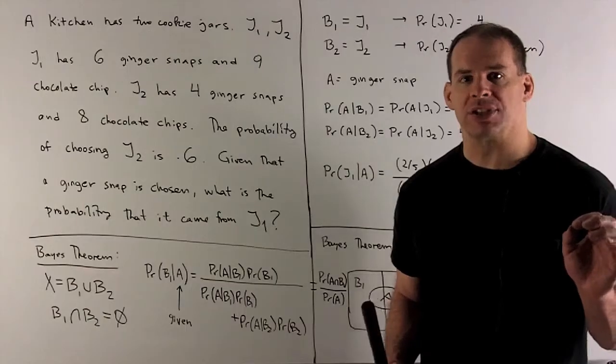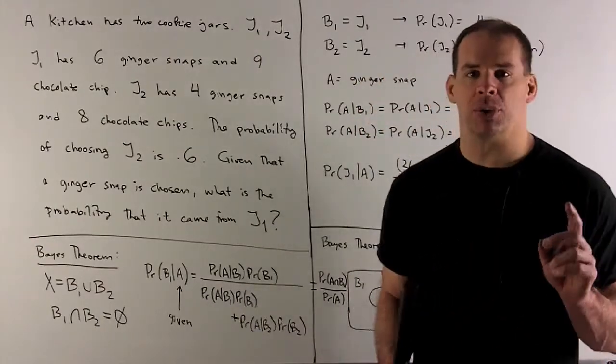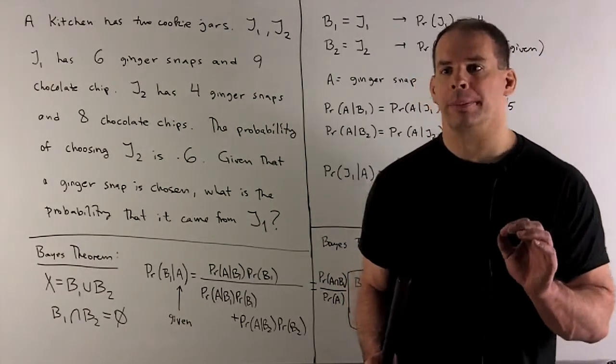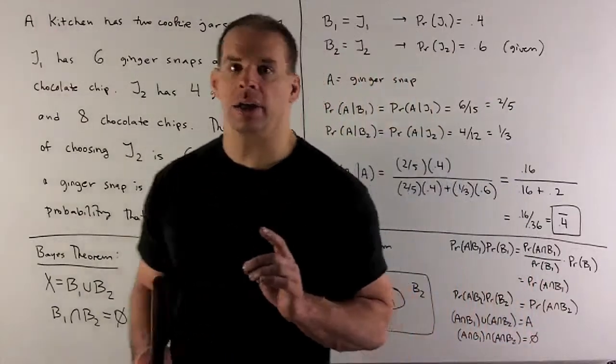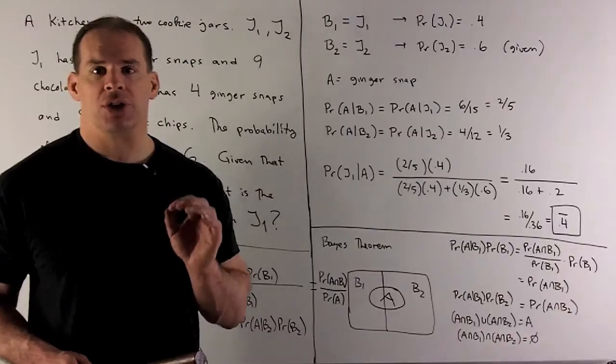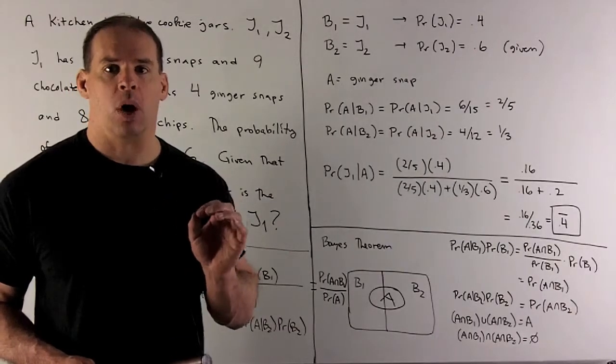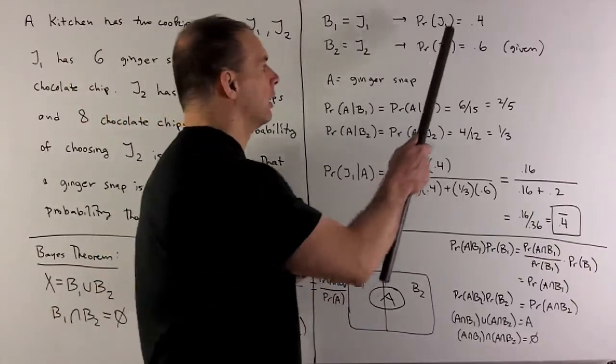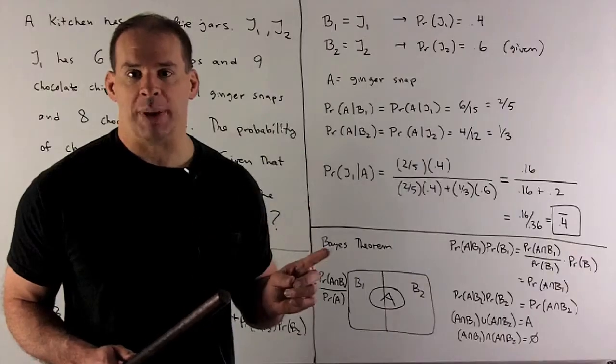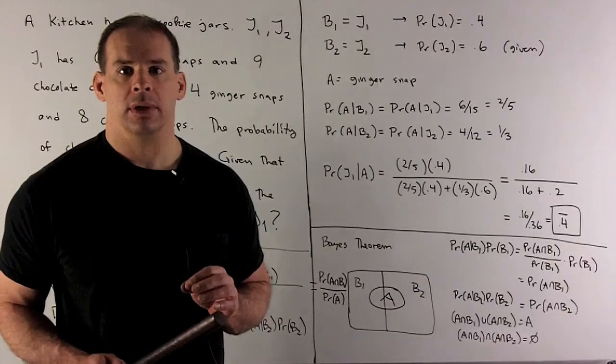Since B1 is jar one, B2 is going to be jar two. Now we just have to figure out what numbers go where. If I have jar two, we know the probability of jar two is going to be 0.6. So that means the probability of picking jar one is going to be 0.4. The sum of these two, that's going to be my B1 and B2. The union is going to give me the whole space. So the sum of the probabilities has to be equal to one.